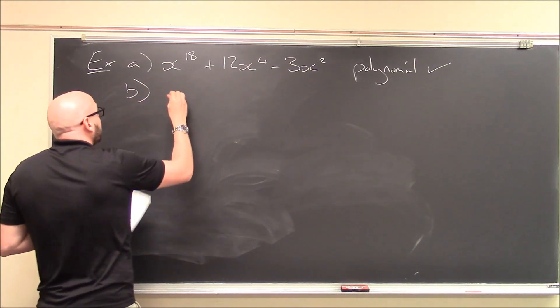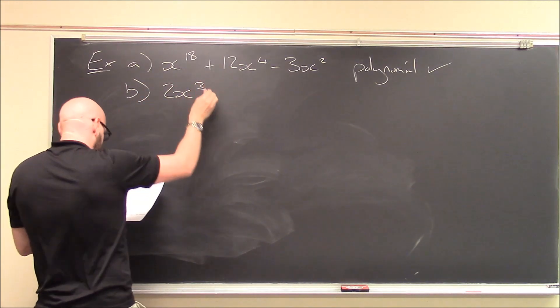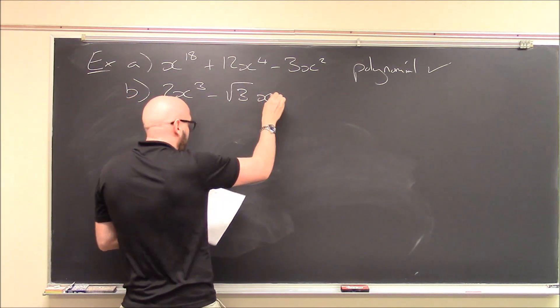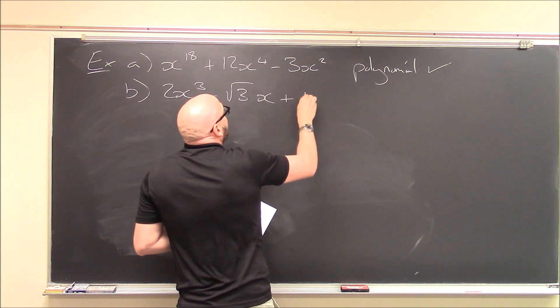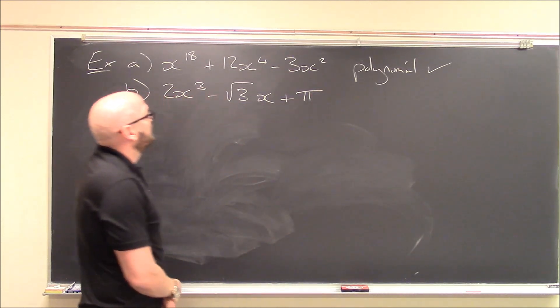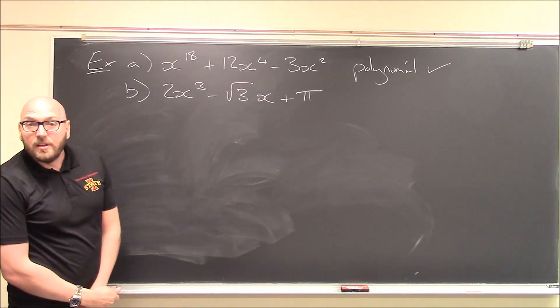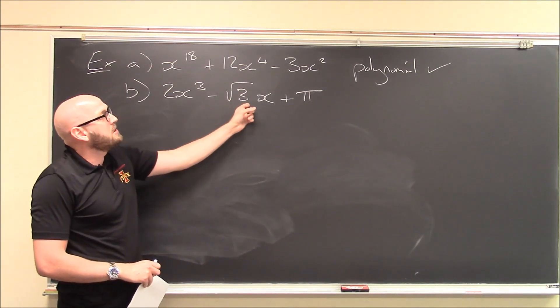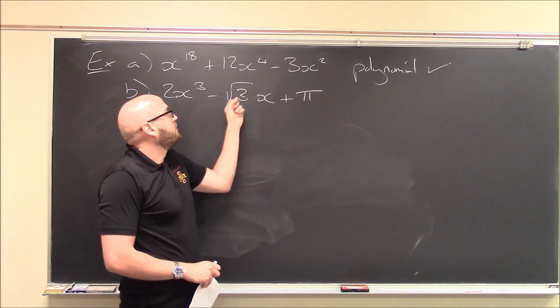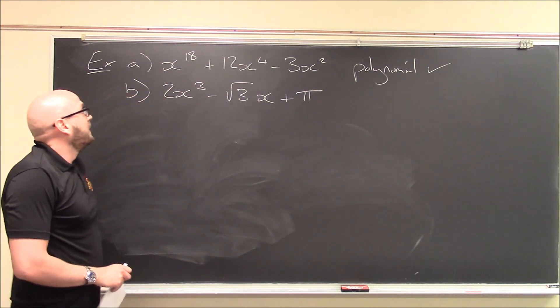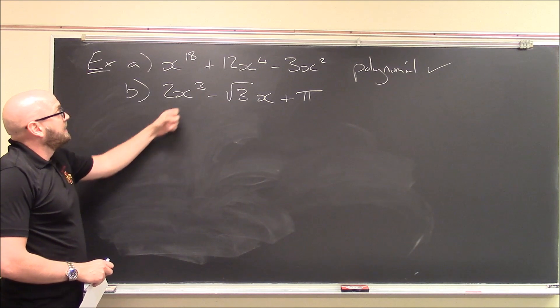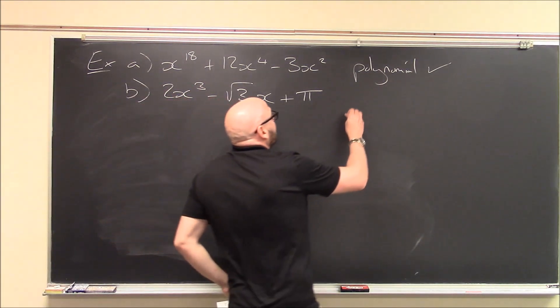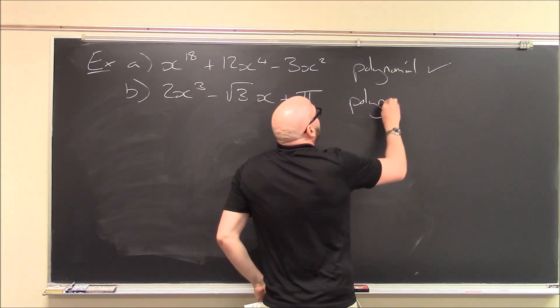Here's another one. 2x cubed minus, how about this? Here's my coefficient, square root of 3, times x. And this term is just the number pi. Is this a polynomial? Well, yeah, I've thrown in some scary-looking numbers, but my coefficients are allowed to be anything. Here it's root 3, here it's pi. The only thing I'm not allowed to do is have fractional exponents or negative exponents. And I don't have that.